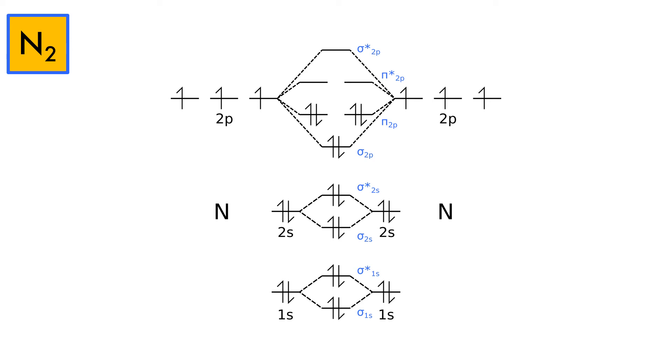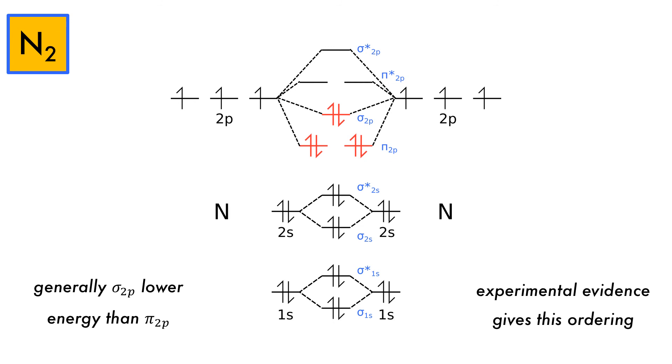A short note on the molecular orbital diagram of dinitrogen. Whilst the general rule is that the sigma 2p orbitals have lower energy than the 2p pi orbitals, experimental evidence has shown that in dinitrogen the pi 2p orbitals are lower in energy. Without experimental evidence though, there is no way to know that the sigma and pi order is reversed.